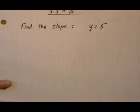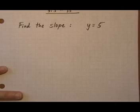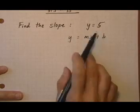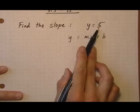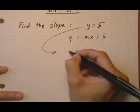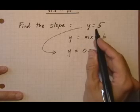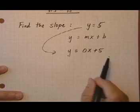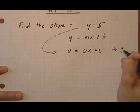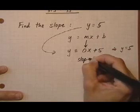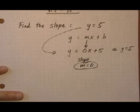Let's go to 3.3 number 15. Find the slope — y equals 5. This is in the right format; we want to compare it to y equals mx plus b, but there's some stuff missing. All we have is a constant term — we don't have the x term. But we could say y equals 0 times x plus 5, because 0 times x makes the x go away, and that's why there's no x in the original. So the slope must be 0. If the x term is not there, then the slope has to be 0 to make the x disappear.